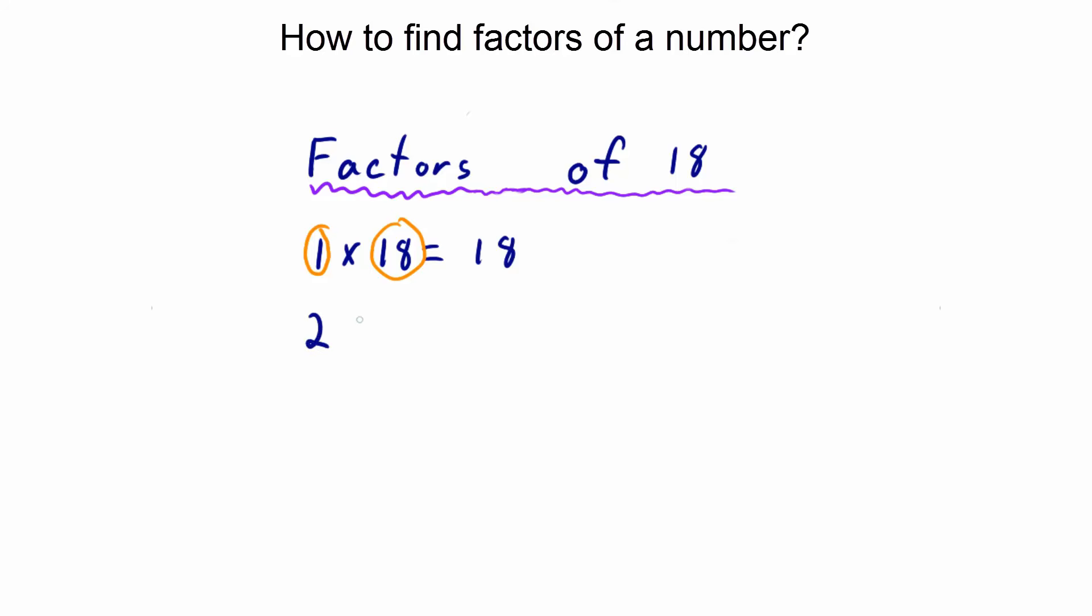So, are there any other factors? Yes. 2 times 9 equals 18. So, 2 and 9 are factors of 18.